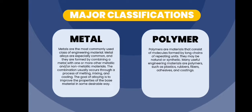Next classification is polymer. Polymers are materials that consist of molecules formed by long chains of repeating units. They may be natural or synthetic. Many useful engineering materials are polymers, such as plastics, rubbers, fibers, adhesives, and coatings.